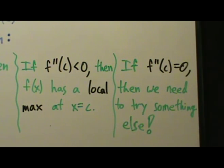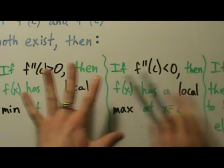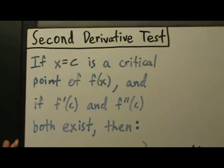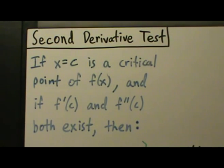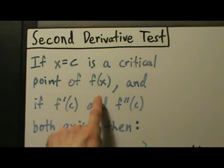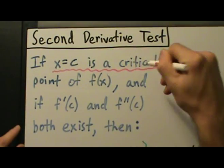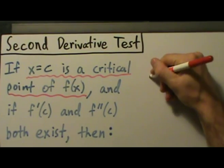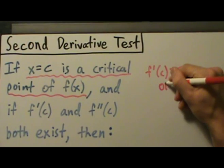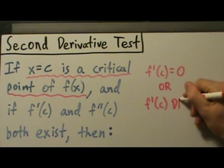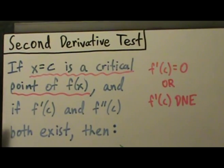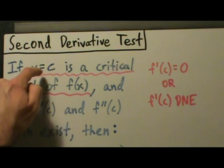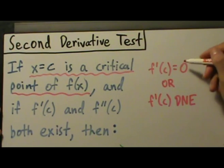Let's talk about why this works. Let's go back and dissect this. If x equals c is a critical point of f of x, what does that mean? Just by definition of a critical point, that means f prime of c equals zero, or f prime of c just doesn't exist. So if f of x has a critical point at x equals c, then by definition, f prime of c is zero or f prime of c does not exist.